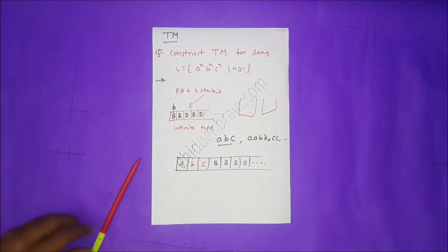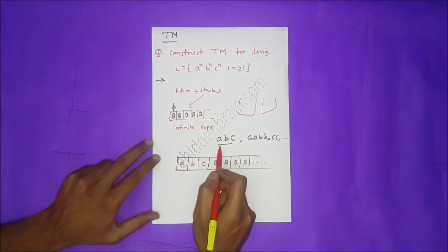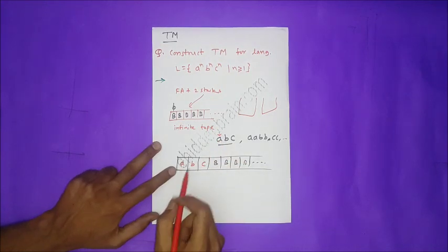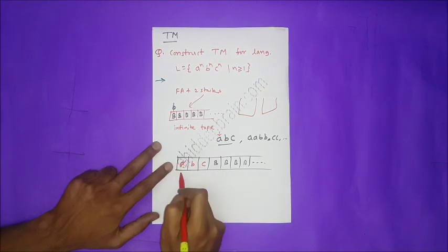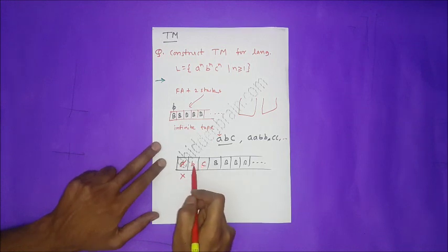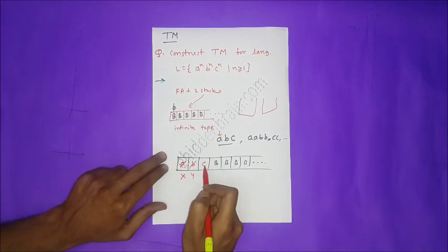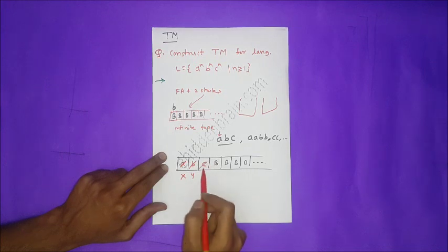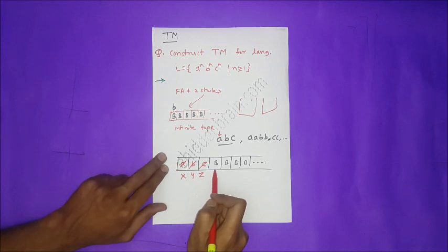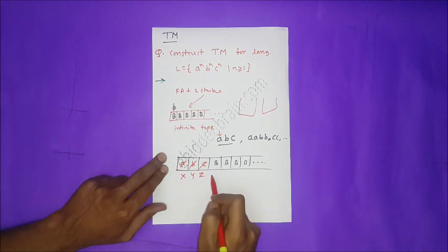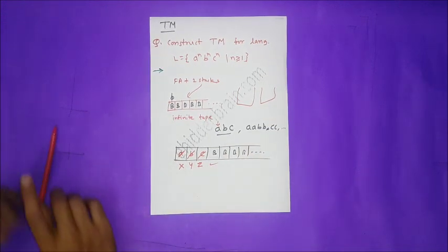The algorithm works like this: read A on the tape and replace it by X; then read B and replace it by Y; then read C and replace it by Z. If after a scan we encounter a blank and the previous symbol is Z, we can say the string is accepted.